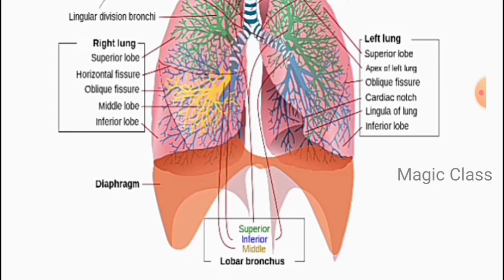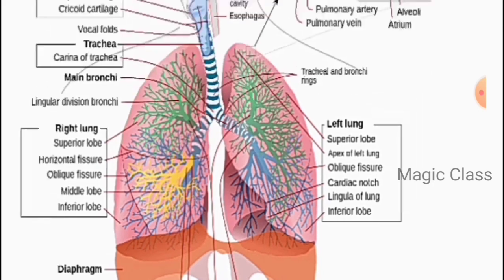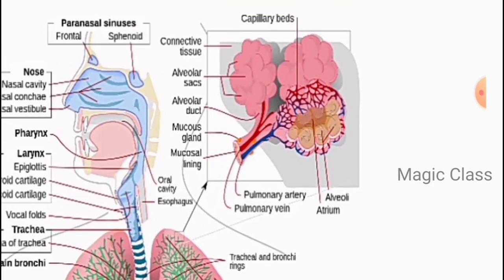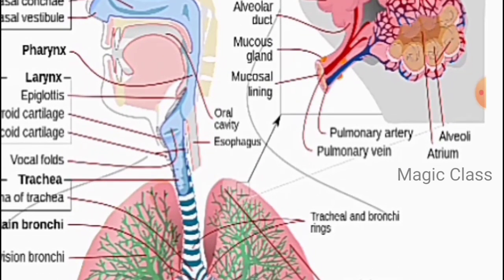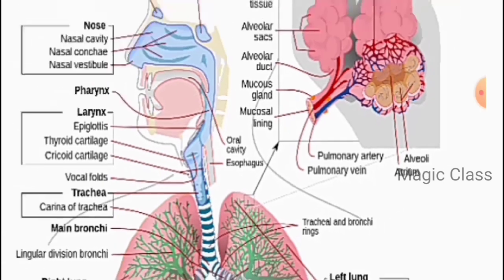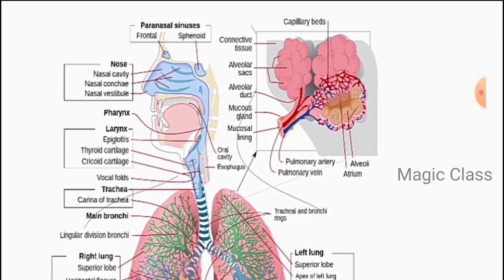The left lung is slightly smaller than the right lung. Within the lungs, each bronchiole leads to a bunch of air sacs called alveoli — as shown in the diagram here. These air sacs are called alveoli.